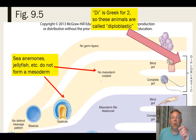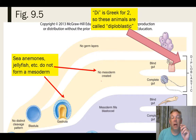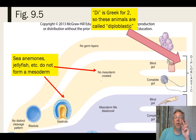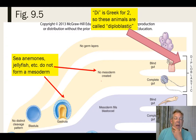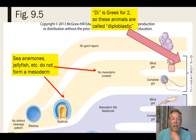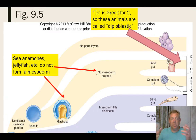Some organisms undergo gastrulation but only form two of the germ layers — only ectoderm and endoderm; they do not form the mesoderm. Since they only form two germ layers, we call those diploblasts, or they're diploblastic. Di is Greek for two. Examples of these animals are sea anemones, jellyfish, and comb jellies. This is how we infer that these organisms are closely related, but different than other organisms, because they develop differently.